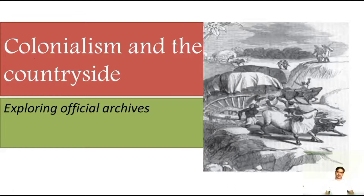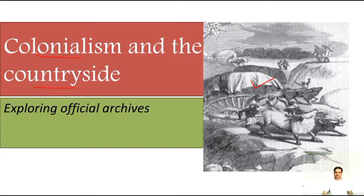Students, we are going to start the chapter Colonialism and the Countryside. Here, colonialism refers to British rule which started in India at that time, and the countryside refers to the rural areas. We will discuss the effect of the policies made by the Britishers upon these country people or the peasants of that time. We are going to study this history with the help of official archives — official records which are preserved from that time and still available.